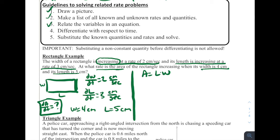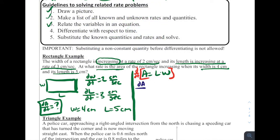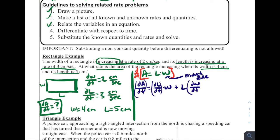Next, differentiate with respect to time. Taking the derivative of A = L·W with respect to time requires the product rule — a function times a function — giving: dA/dt = (dL/dt)·W + L·(dW/dt). We are trying to find dA/dt, and we have all the other values ready to substitute.